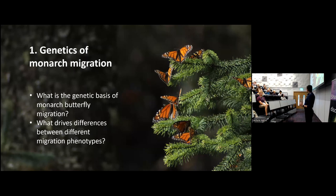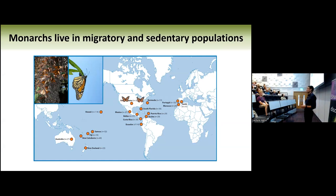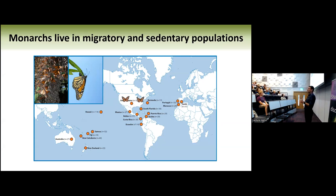People are very interested in how monarchs actually know where to go and how they get there. One way to start looking at this is the genetic basis of migration. Monarchs are actually occurring in many different places around the world — they've colonized anywhere where they can live throughout the year where there's milkweed. People have moved milkweeds around the world either intentionally or unintentionally, and monarchs disperse and find these places and start breeding. All those dots where there are no migrating monarchs are resident populations. In Australia there is some indication they migrate somewhat, but otherwise they're resident populations that breed throughout the year.